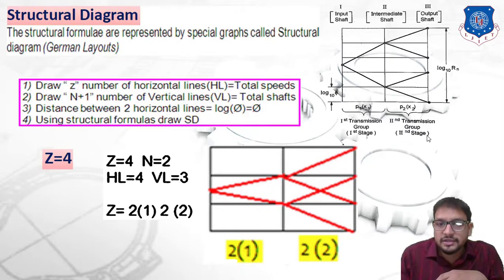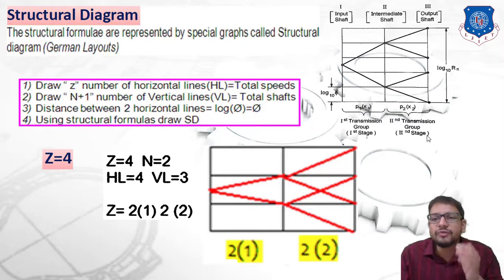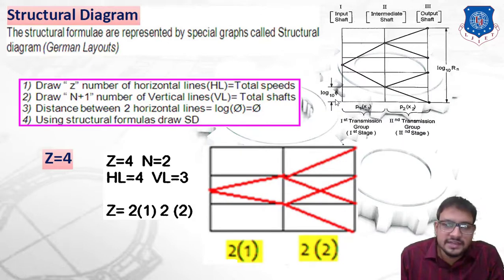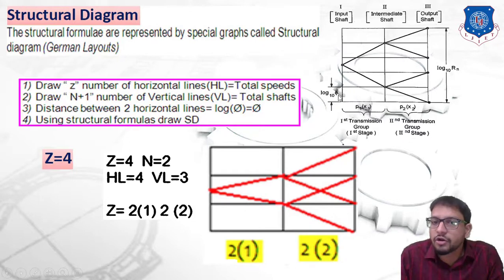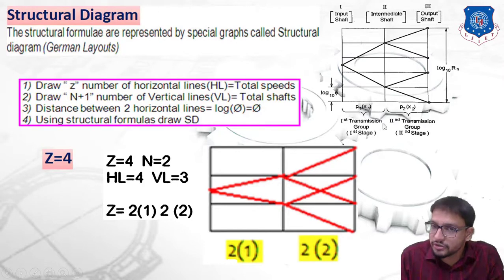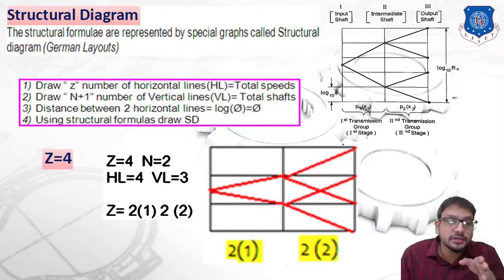The distance between two horizontal lines is kept equal to log 5 to the base 10. In a general way when we draw this diagram we draw it randomly but mention that the distance is log 5 to the base 10. The first stage is written as p1 x1 and the second stage as p2 x2, representing the first and second transmission groups.